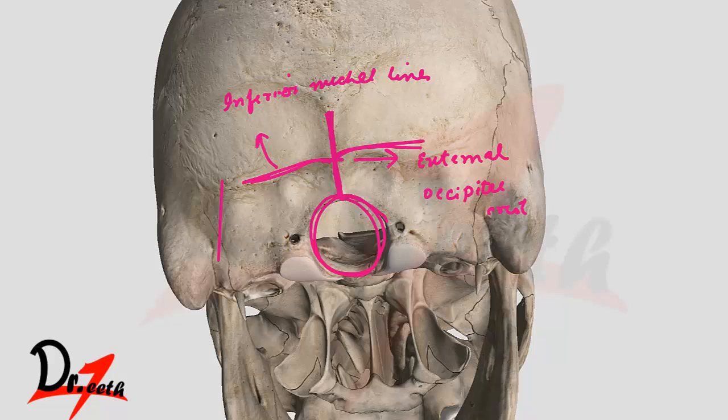So this was a brief introduction to the Norma Occipitalis. When we study the occipital bone in isolation, we will get to know more about the anatomy. Hopefully, thanks for watching — hope you liked the video. Don't forget to subscribe and comment. Take care till we meet next time.